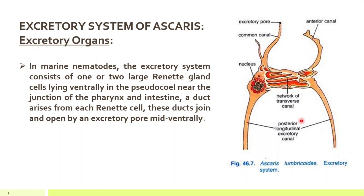On the ventral side in the pseudocoelom, near the junction of pharynx and intestine — that is, at the junction of foregut and midgut — a duct arises from each renette cell. These ducts join and open by an excretory pore mid-ventrally. This is the main important point: the excretory pore is present mid-ventrally at the junction of pharynx and intestine, which internally forms the ducts or excretory canals.